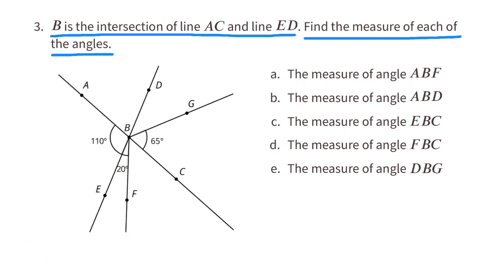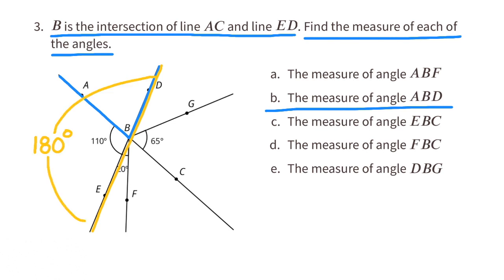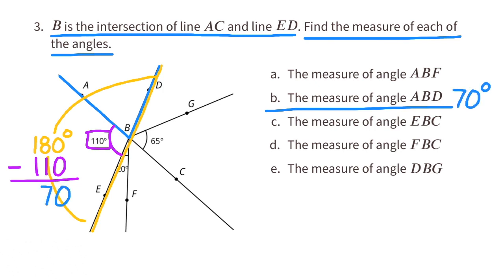B: the measure of angle ABD. Line AC is straight, so it measures 180 degrees. Since angle ABE is 110 degrees, 180 minus 110 gives us the missing measure of angle ABD, which is 70 degrees.